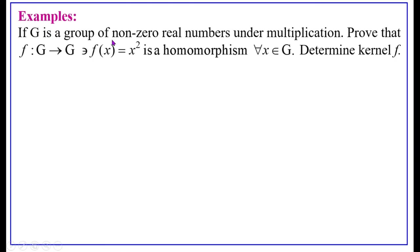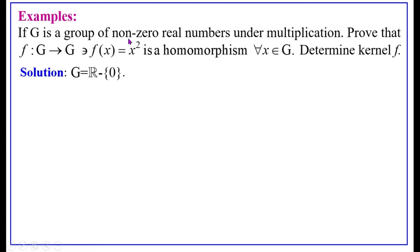Now, if G is a group of non-zero real numbers under multiplication, prove that F from G to G' defined by F(X) equals X squared is a homomorphism for all X in G. Also find the kernel of F.